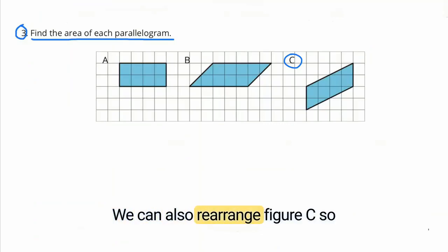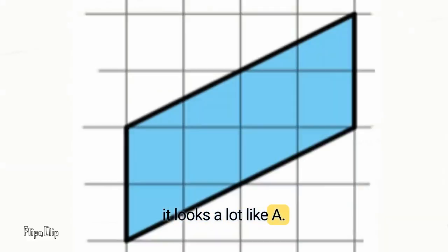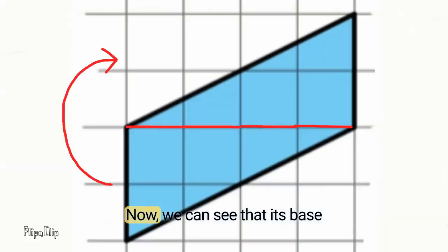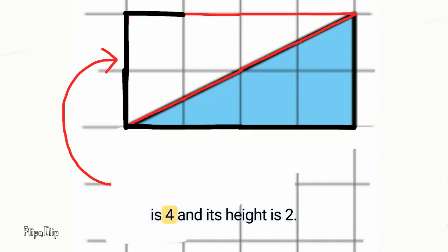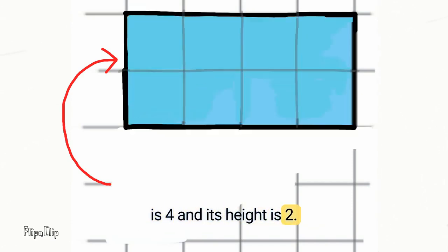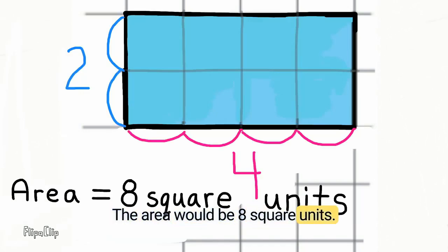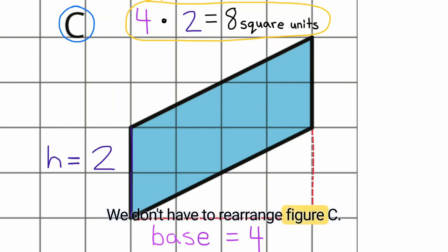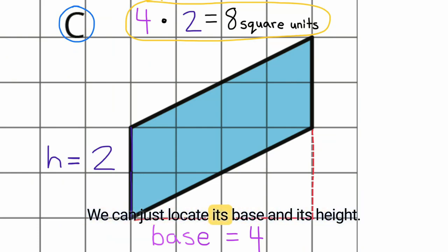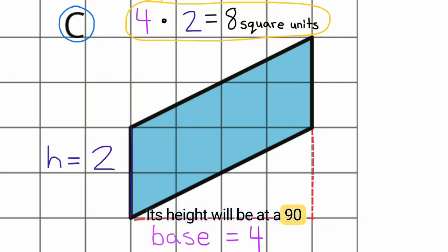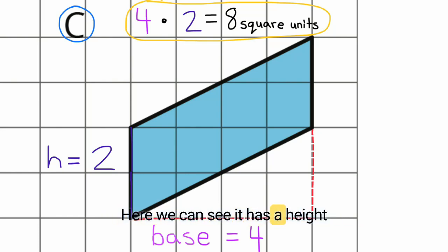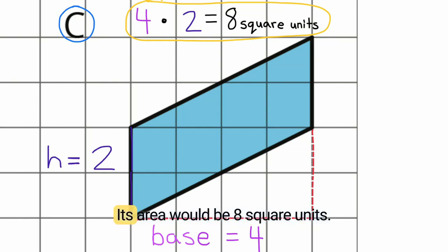We can also rearrange figure C so it looks a lot like A. Now we can see its base is 4 and its height is 2, so the area would be 8 square units. We don't have to rearrange figure C — we can just locate its base and height. The height is at a 90-degree angle in relation to its base: height of 2 and base of 4. 4 times 2 equals 8, so the area is 8 square units.